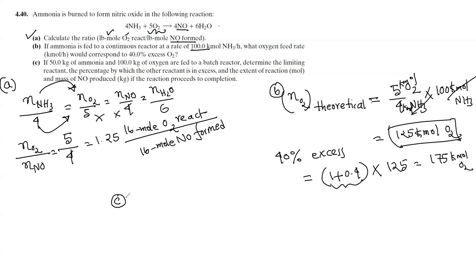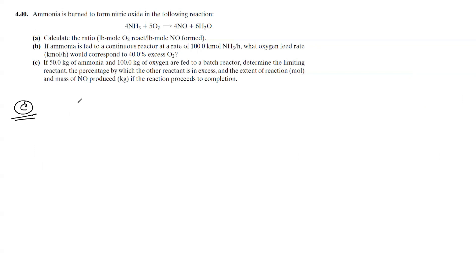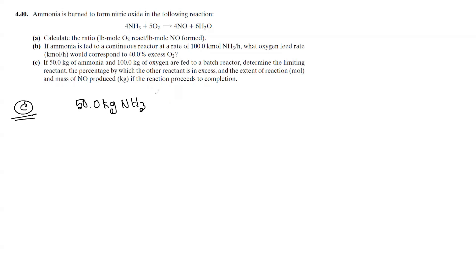For part C: if 15 kg of ammonia and 100 kg of oxygen are fed to a batch reactor, we need to determine the limiting reactant. We have 15 kg of ammonia and 100 kg of oxygen. Converting 15 kg NH3 gives approximately 0.882 kmol NH3.